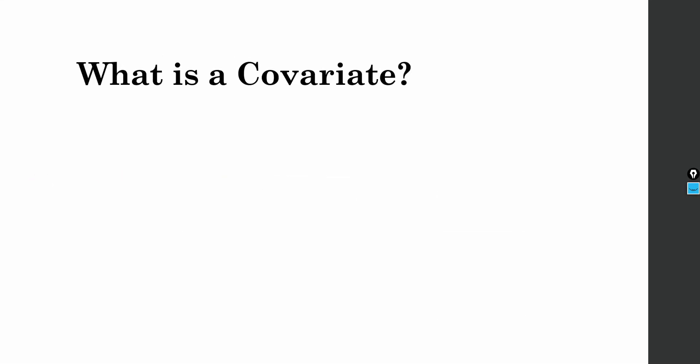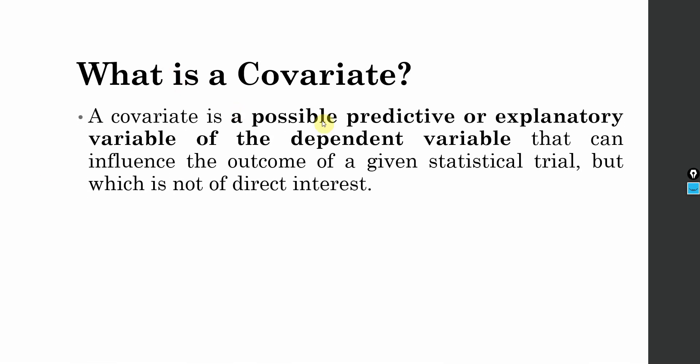A covariate is a possible predictive or explanatory variable of the dependent variable or endogenous variables in this study that can influence the outcome of a given statistical trial, but which is not of direct interest. A covariate can influence the endogenous variables — that is, mediators and the dependent variable — but I'm not interested in assessing the impact of age or gender directly.